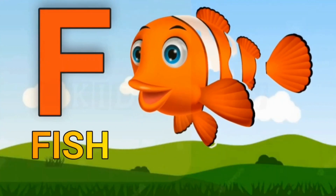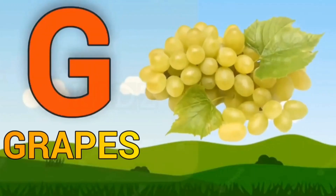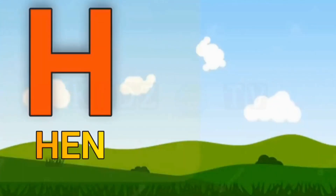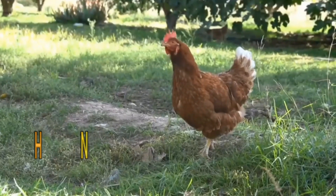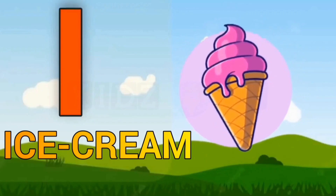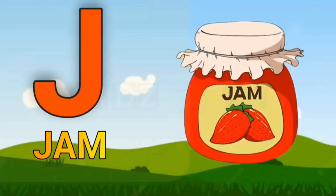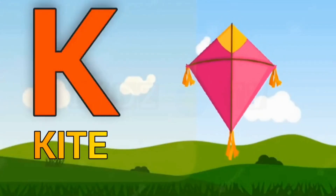F for Fish. G for Grapes. H for Hen. I for Ice Cream. J for Jump. K for Kite.